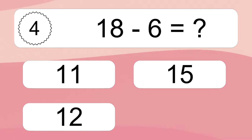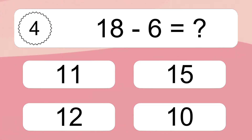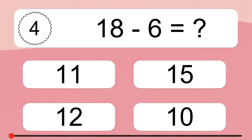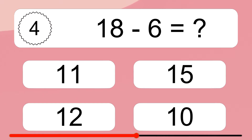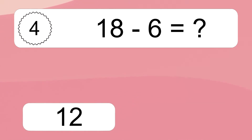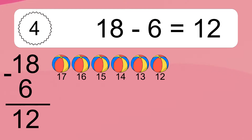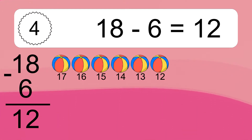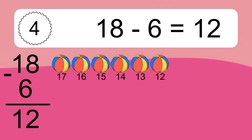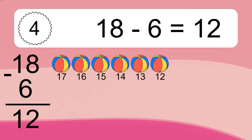18 minus 6 equals what? 18 minus 6 equals 12. Let's count it. 17, 16, 15, 14, 13, 12.